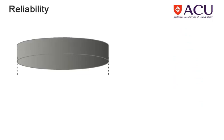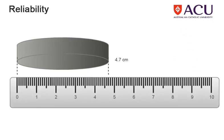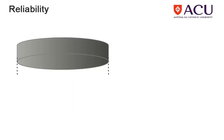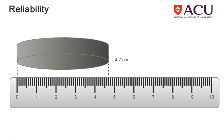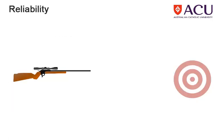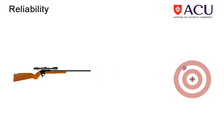Reliability is the ability to consistently obtain the same value over and over again when measuring an object. A gun sight may consistently cause the bullet to hit the top left corner of the target. Because it is consistent, this sight is considered reliable, even though it isn't accurate.